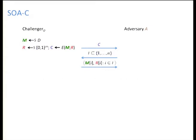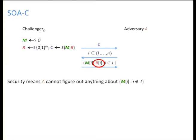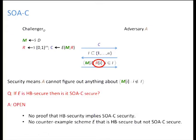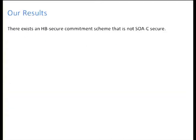Now we present the selective open scenario in which we are interested: now the coins are also opened. The security guarantee we want to achieve is the same, and the important question is whether hide-and-bind security implies selective open security in this scenario. This was a long-standing open question — there was no proof of the implication, but also no counterexample. Our result for commitment is that there is some commitment scheme which is hide-and-bind secure but not selective open secure.